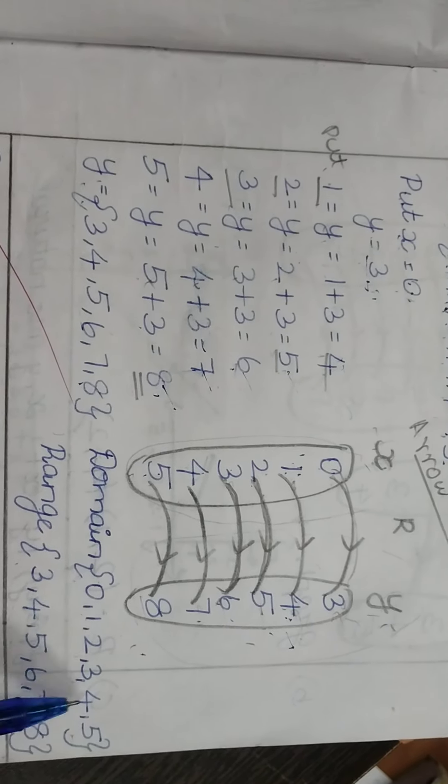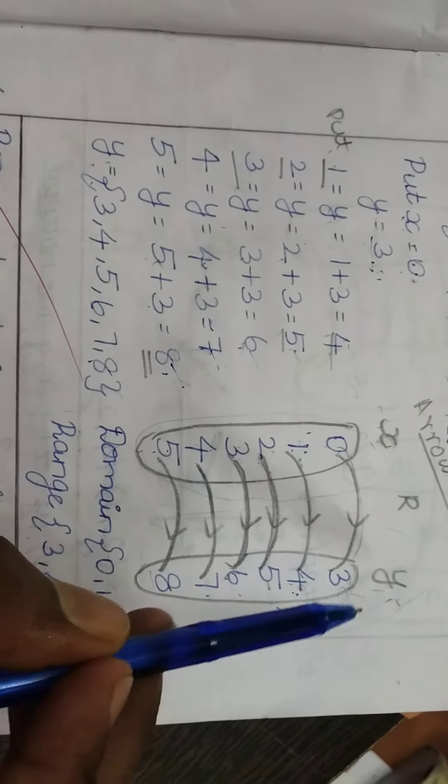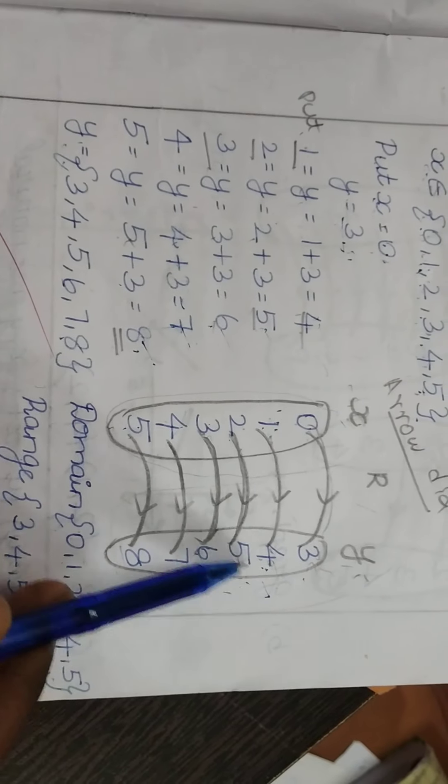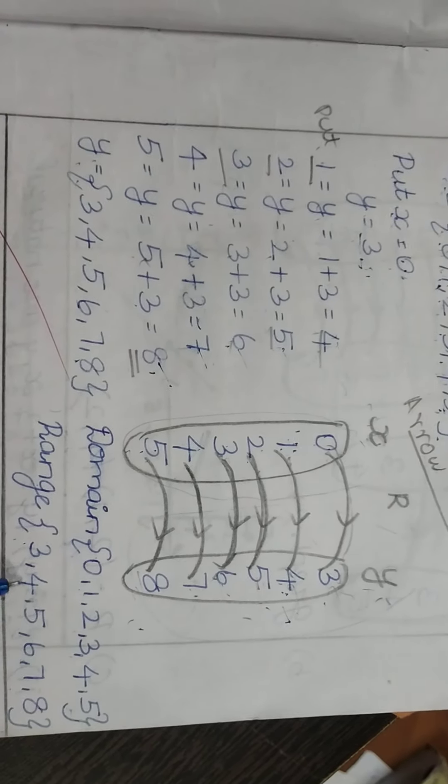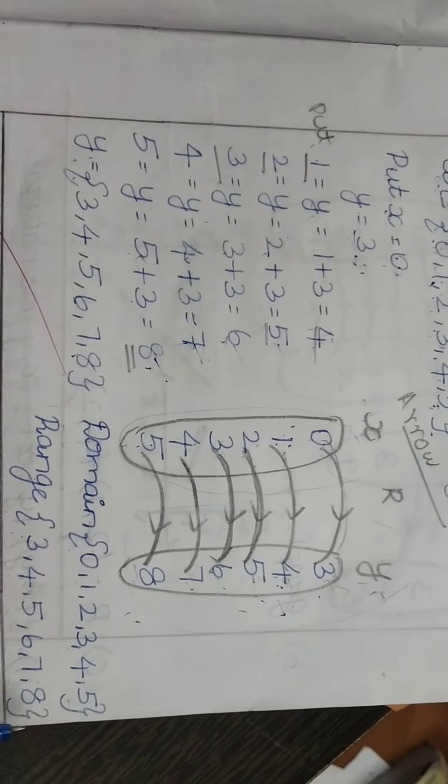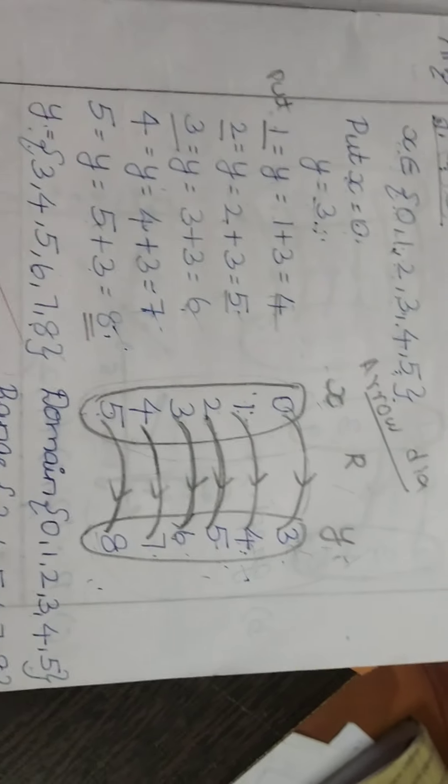Domain = {0, 1, 2, 3, 4, 5}. Range = {3, 4, 5, 6, 7, 8}. Ok students.